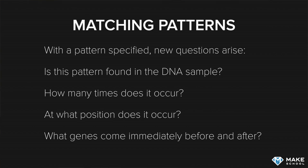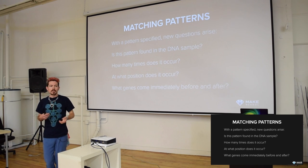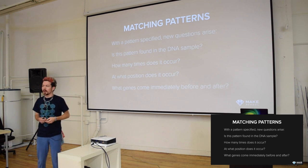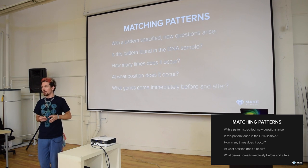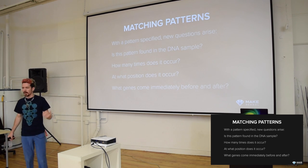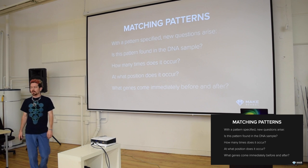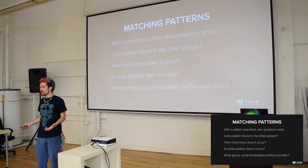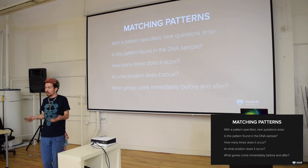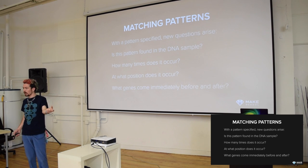Where does the pattern occur in the sequence - the beginning, the end? What comes right before and after it? For example, suppose you knew that right after a particular gene sequence something is failing in the RNA building process. There are also times when you search for a word like 'make' and want to know what word follows it - 'make games', 'make school', 'make love' - whatever you're looking for.